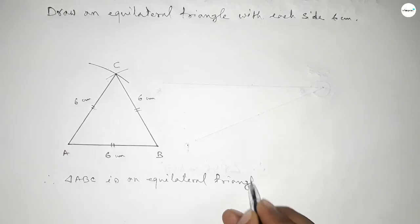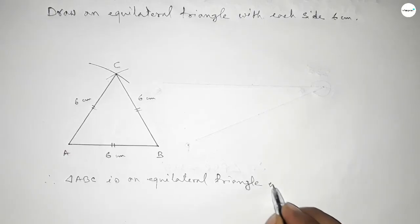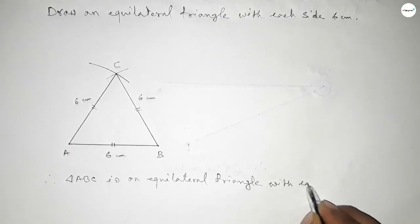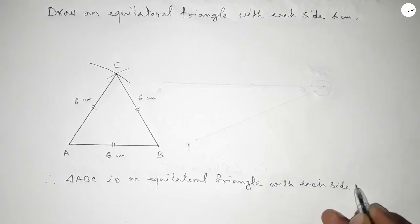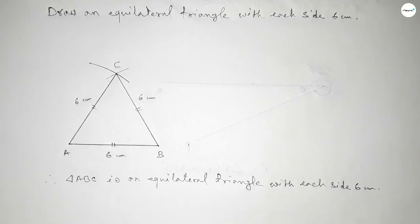Therefore, triangle ABC is an equilateral triangle with each side 6 centimeters. By this process we can construct an equilateral triangle with each side 6 centimeters. That's all — thanks for watching. If this video is helpful, please share it with your friends.